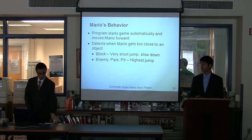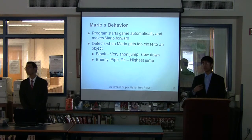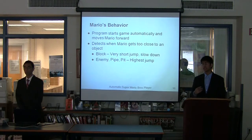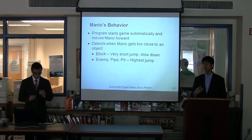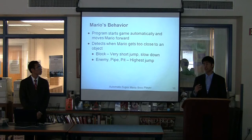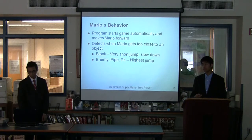This is a final rundown of our program. The program starts the game automatically and Mario moves forward. The program consistently checks how close Mario is in relation to other objects. When Mario becomes too close to an object, he performs a jump for a specific amount of time, which allows for a certain jump height. When Mario comes close to a staircase, he performs small jumps and moves slowly. For other objects, he performs a full jump.